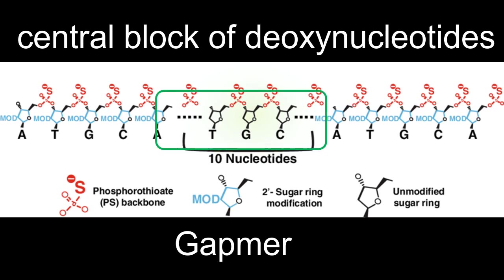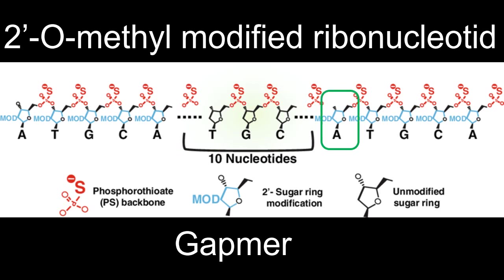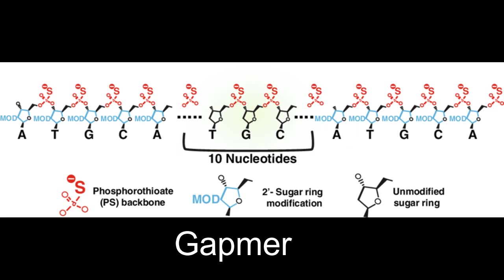A gapmer contains a central block of deoxynucleotides sufficient to induce RNase H cleavage, flanked by blocks of 2'-O-methyl modified ribonucleotides that protect the internal block from nuclease degradation. These chimeric oligonucleotides have also been promoted as an answer to yet another antisense issue.